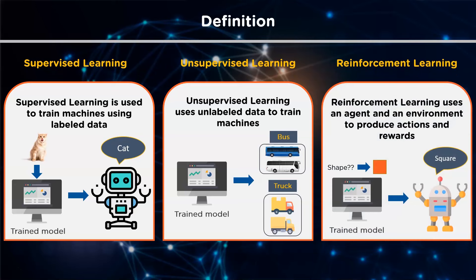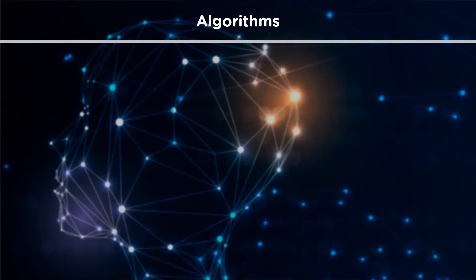Reinforcement learning trains a machine to take suitable actions and maximize reward in a particular situation. It uses an agent and an environment to produce actions and rewards. The agent has a start and an end state, but there might be different paths for reaching the end state, like a maze. There is no predefined target variable. An example is training a machine to identify the shape of an object — such as a square, triangle, rectangle, or circle.